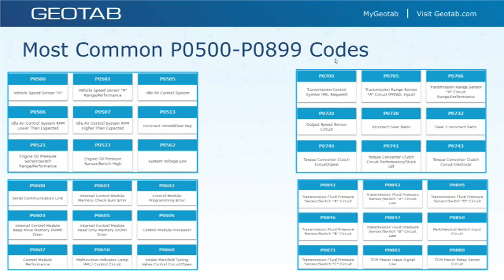Codes between P0500 and P0899 involve vehicle speed controls, including your idle air control system, idle control valve, vehicle speed, computer output, faulty computer, or transmission codes. There is a wide range of codes within this category covering various subcategories and affected systems.